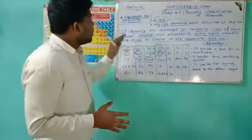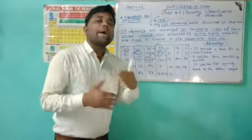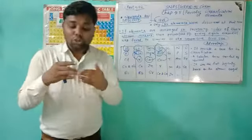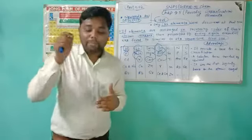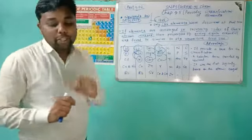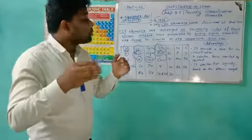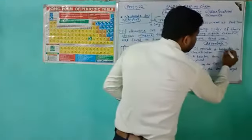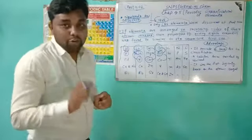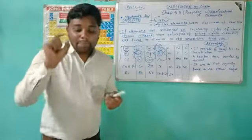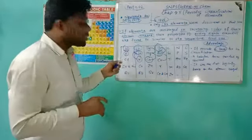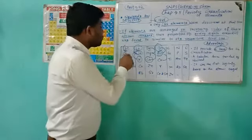This law has some advantages and some disadvantages. The first advantage is that Newlands' Law provided a base for the classification of elements on the basis of their similar properties. Every eighth element has similar properties to the first one, giving a foundation for grouping elements with similar characteristics together.